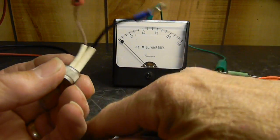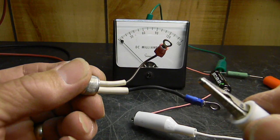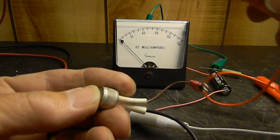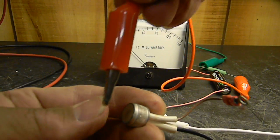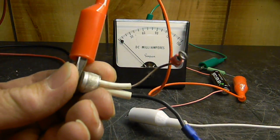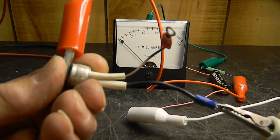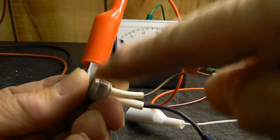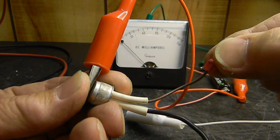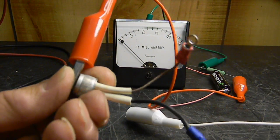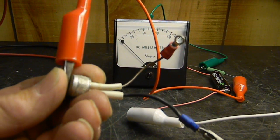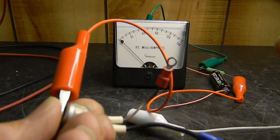We're going to hook the negative side, the white one, to the anode. Then we're going to hook the negative side to the cathode. This is the cathode, this is the anode, and this is the gate. Plus to the anode, negative to the cathode. That's the only way the diode will conduct.